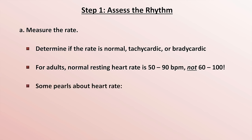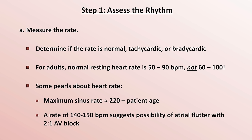Some pearls about the heart rate: the maximum predicted sinus rate is approximately 220 minus the patient's age. There are some exceptions, particularly among world-class elite athletes. But if you see an 80-year-old patient with a heart rate of 170, you can be very sure that it's not sinus tachycardia. A heart rate of 140 to 150 beats per minute specifically suggests the possibility of atrial flutter with 2-to-1 AV block, meaning that for every two waves of depolarization reaching the AV node, only one passes through to depolarize the ventricles.